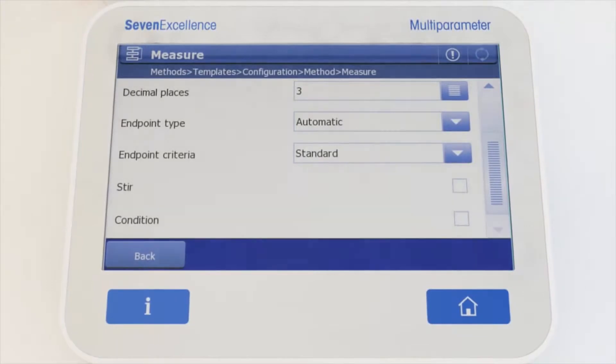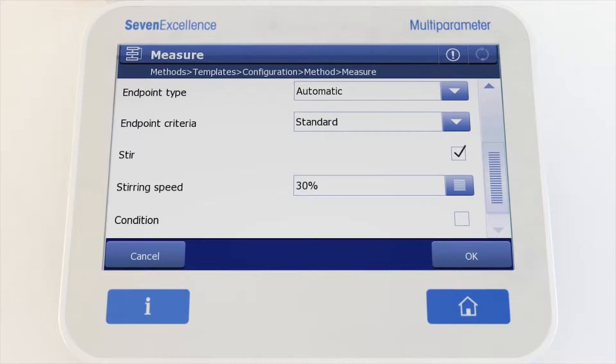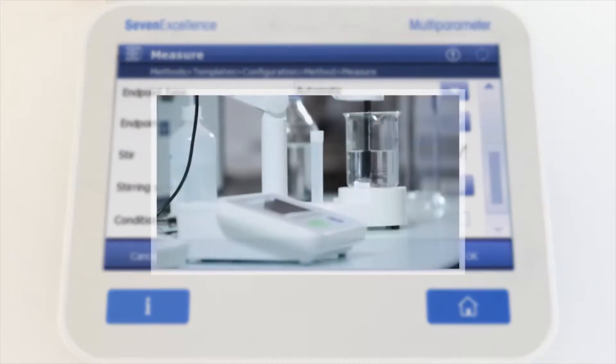The optional stirrer U-Mix provides additional precision. Stir your sample whenever needed, during or in between measurements, for highest repeatability.